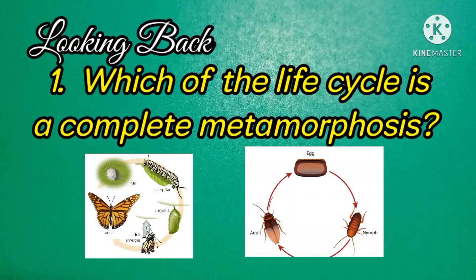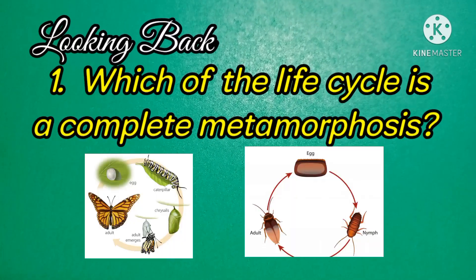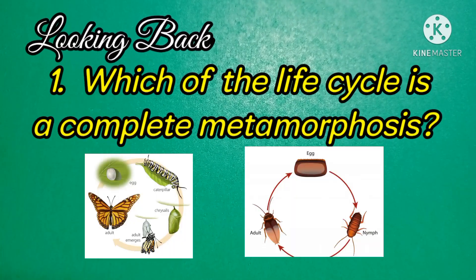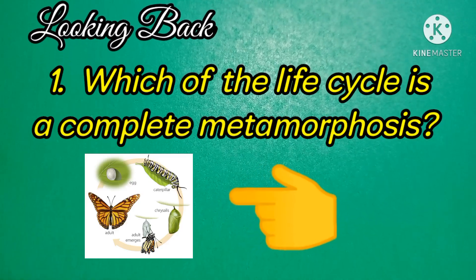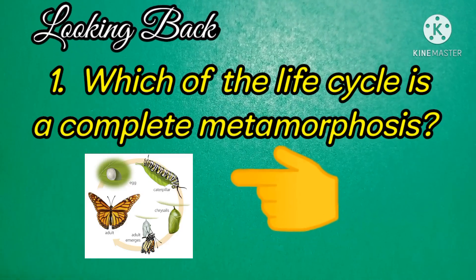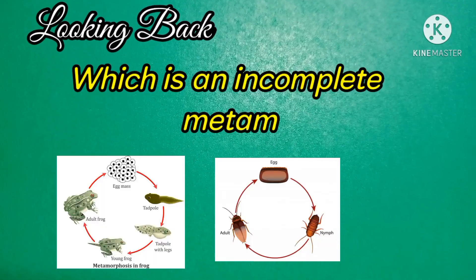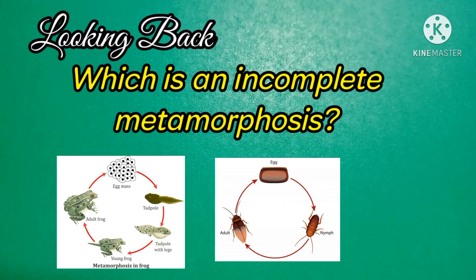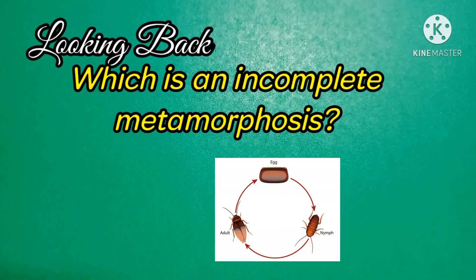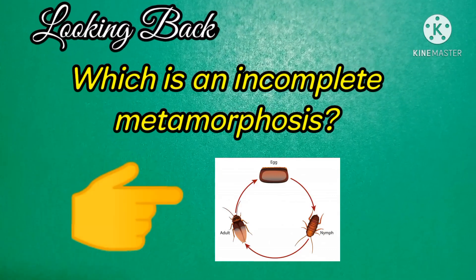Which of the life cycles is a complete metamorphosis? Right — butterfly. Which is an incomplete metamorphosis? Very good — cockroach.